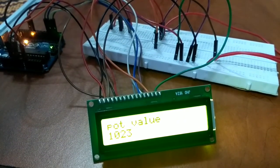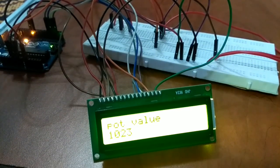You can see that the value varies from 0 to 1023. This is a simple setup of interfacing the potentiometer and displaying the values on LCD.